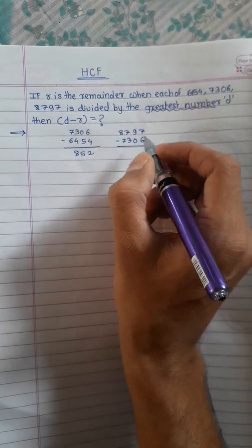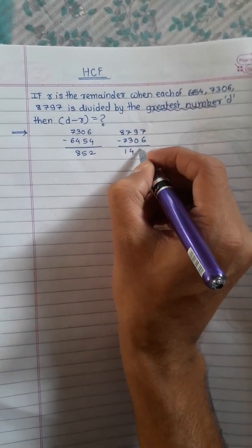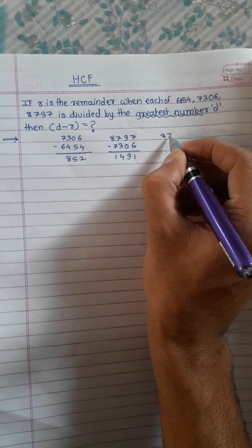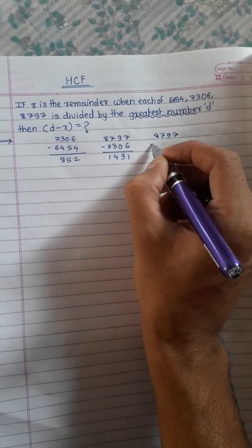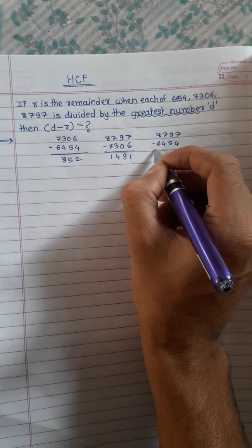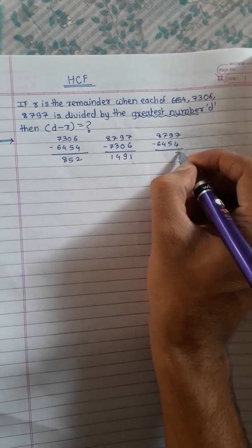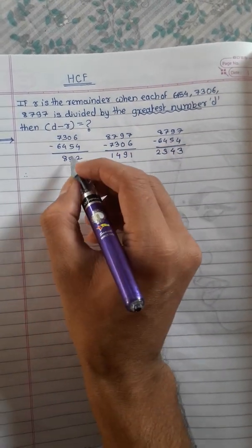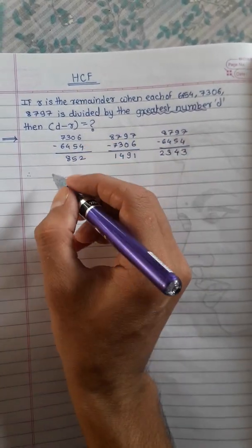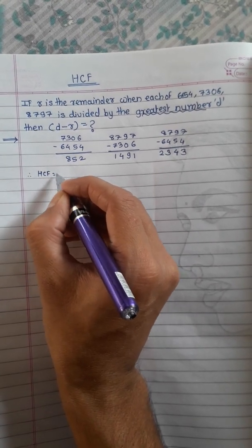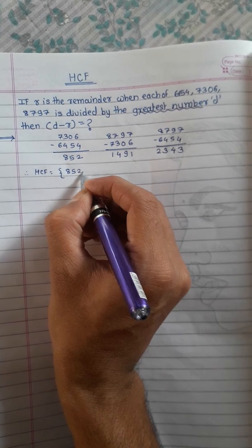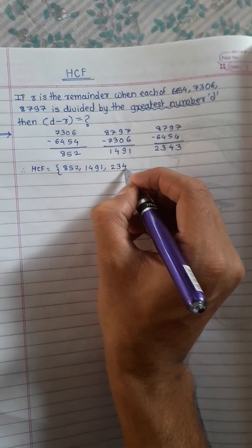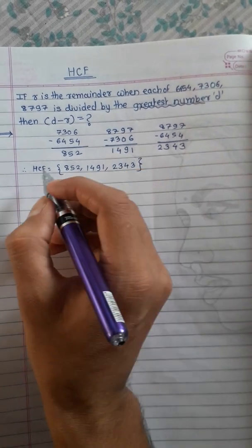The third difference is the first and third number: 8797 minus 6454, which gives us 2343. So among all these differences — 852, 1491, and 2343 — we will find the HCF.